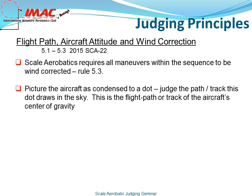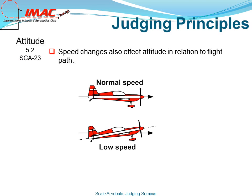Picture the aircraft as a condensed dot. Judge the path or track this dot draws in the sky. This is the flight path, or track, of the aircraft's center of gravity. Speed changes also affect the attitude in relation to flight path. In a low-speed situation, the nose would be pitched up to maintain horizontal flight.